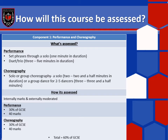The second element of component one is your choreography, where you will choreograph either a solo or a group performance. A solo piece will last between two to two and a half minutes, and a group piece will last between three to three and a half minutes for two to five dancers. The exam board will give you five different options to choose from for your choreography; you take that stimulus, create your own storyline, choose your own music and create your own performance. This is internally marked by me, then recorded and sent to moderators for external moderation.